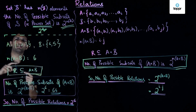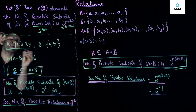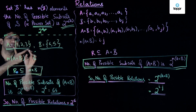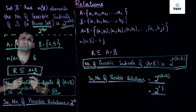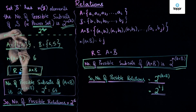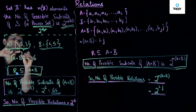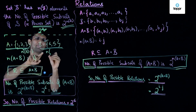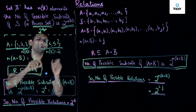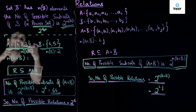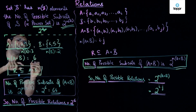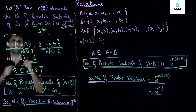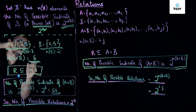Let us see an example. We have a set A consisting of elements 1, 2, and 3, and B consisting of 4 and 5. The cardinality of A cross B will be 6. The number of elements in set A is 3, the number of elements in set B is 2, and so the number of elements in A cross B — the Cartesian product — is n(A) into n(B), which is 3 into 2, equal to 6.